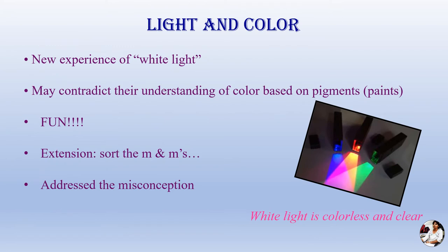The next experiment is Light and Color. In this experiment we will discuss the phenomenon of dispersion with the help of a prism — how white light is dispersed into seven colors. White light is a colorless and clear light. But I have a question: what is the color of sunlight? The answer is white light. Now, what is the color of a light bulb? The answer is again white light.